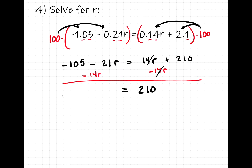So we have minus 21r, minus 14r. We have two negatives, becomes more negative. So that's negative, or minus 35r.